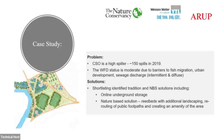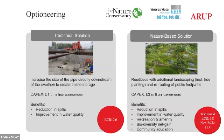Looking at it from a more monetized perspective: this is a case study of that particular CSO. The CSO is a high spiller, its WFD status is moderate due to barriers to fish migration, urban development, and sewage discharge. The two options are online underground storage or reedbeds with additional landscaping, rerouting the footpaths and creating amenity in the area. Looking at the optioneering, the capex of the traditional solution is £1.5 million, and the nature-based solution almost doubles the cost at £3 million. But when we look at the benefits, the traditional solution has a benefit-cost ratio of 7.6, whereas under the traditional decision-making process the nature-based solution is only 3.8 — it's half as cost-beneficial. But if you bring in some of those wider benefits, that benefit-cost ratio changes quite significantly, putting those green solutions at the top of the list.